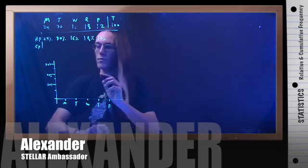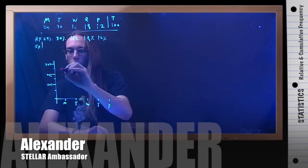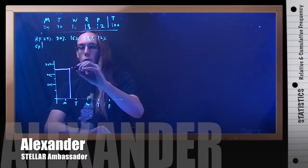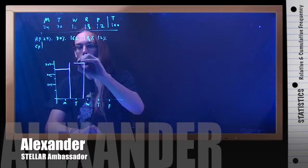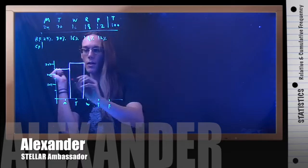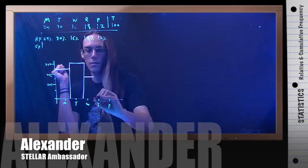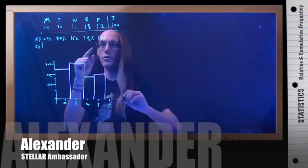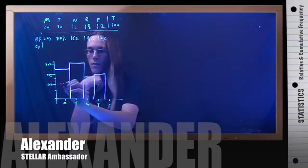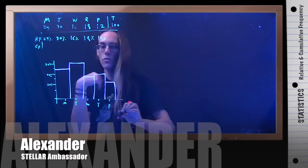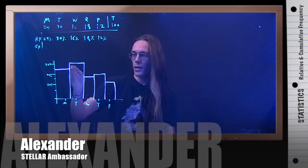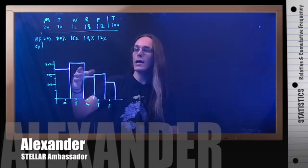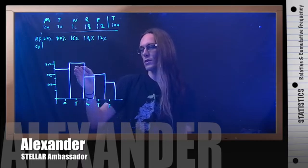On Monday 24% of the people show up, so that bar goes just below the 25% mark. On Tuesday 30% of the students show up, going all the way to the top. On Wednesday we only get 16%, just past the 15% mark. Thursday we have 18%, a little bit more. Finally on Friday we have 12%, just above 10%. This is the relative frequency histogram — it shows the percentage on each individual day on its own. If you add all these up you get a hundred percent, but the graph focuses on each individual day.